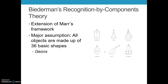Now we move on to Biedermann's recognition by components theory, designed as an extension of Mar's framework. The major assumption is that all objects are made up of 36 basic shapes, which he termed geons — geometric ions, the most basic level of geometry that cannot be broken down further. Examples include a cylinder, a cone, a pyramid, a horn, a football, and what he termed a wine glass.